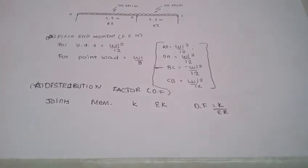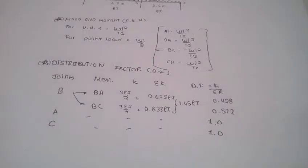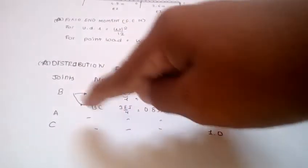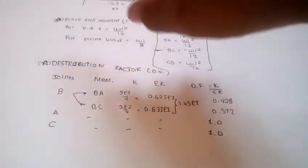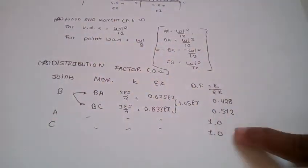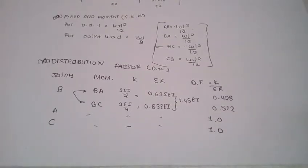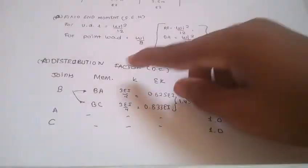For the value of distribution factors, this is the formula you have to use. From joint B, you have to go from BA, BC, and A and C. It is simply supported, so it is 1. If it had been fixed, it will be 0. If both are fixed or in a cantilever, it is 0. So 1, 0, and 1 for simply supported.